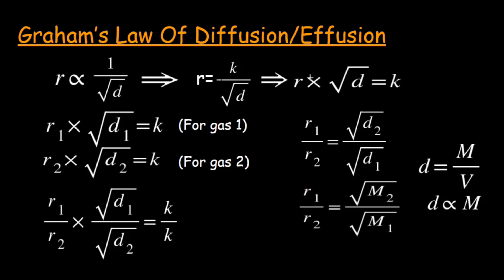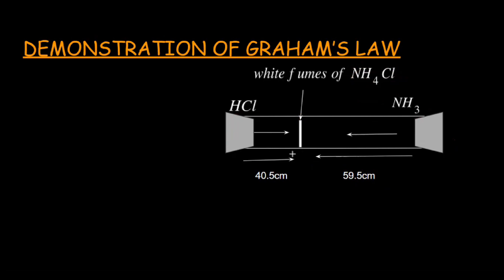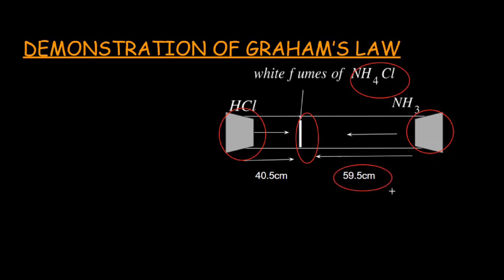Let's demonstrate Graham's law with an example. A glass tube is 100 cm long with openings at both ends, covered with cotton soaked in HCl and NH₃. When NH₃ and HCl react, they form a white film of ammonium chloride. This white film forms at a position where NH₃ molecules have covered 59.3 cm and HCl molecules have covered 40.5 cm, clearly showing that HCl and NH₃ molecules do not cover equal distances — meaning their rates of diffusion are different.